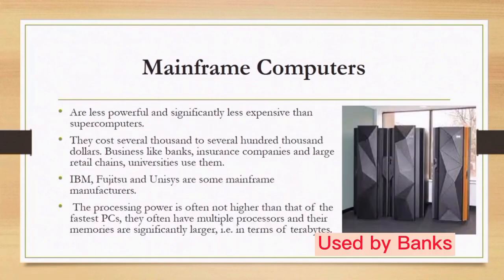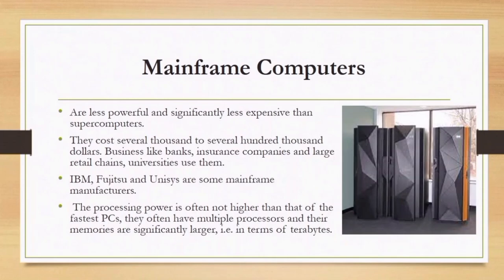The next category is mainframe computers. They cost several thousand to several hundred thousand dollars. Businesses like banks, insurance companies, large retail chains, and universities use them. IBM, Fujitsu, and Unisys are mainframe manufacturers. Their processing power is often comparable to the fastest PCs and they often have multiple processors. Their memory capacity is large, measured in terabytes. Here is a picture of a mainframe computer.